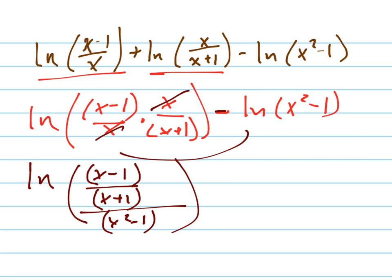And now this can be simplified further. Remember, that's like that right there. So I multiply by the reciprocal: 1 over x squared minus 1. Like that.